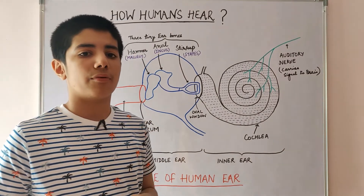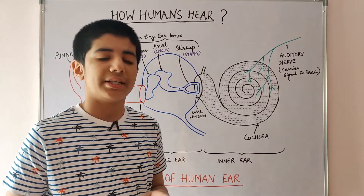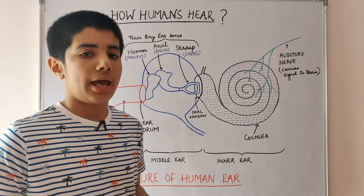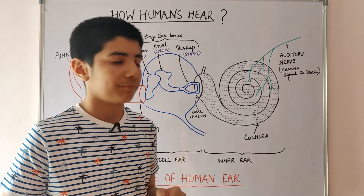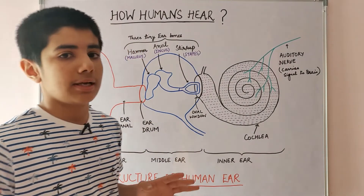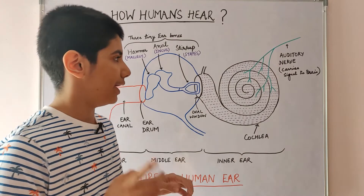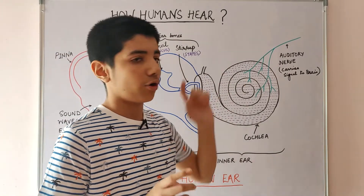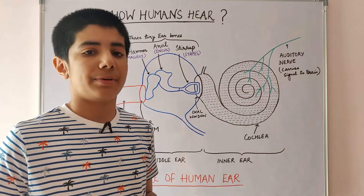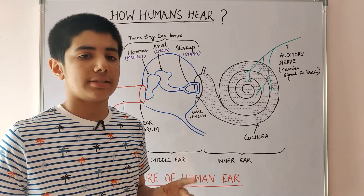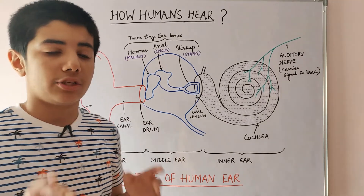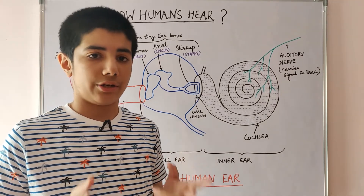The vibrating liquid of the cochlea sets up electrical impulses in the nerve cells present in it. These electrical impulses are passed to the brain by the auditory nerve. The brain interprets these electrical impulses as sound, and we get a sensation of hearing.